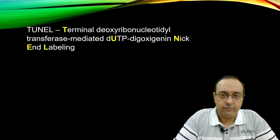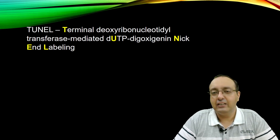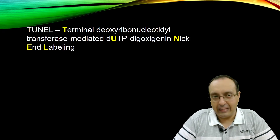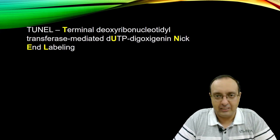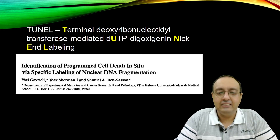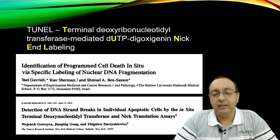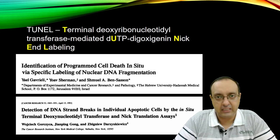The TUNEL assay actually has a long full name: Terminal Deoxyribonucleotidyl Transferase Mediated dUTP Digoxigenin Nick End Labeling — quite a mouthful, even more so than CRISPR, but it is a pretty simple concept to understand. It was developed in the 1990s, with two papers in 1992 and 1993 independently developing this technique.